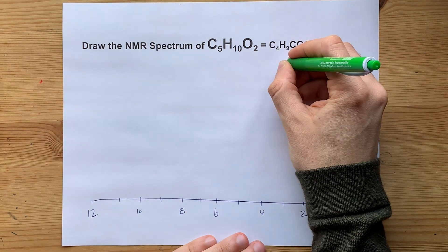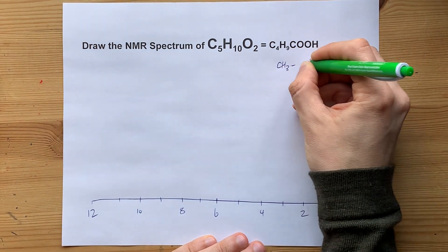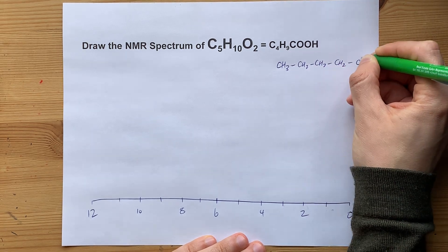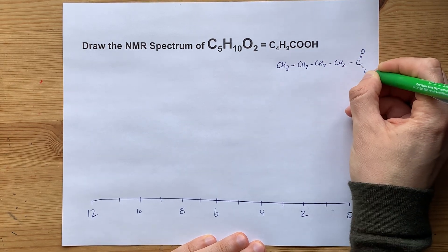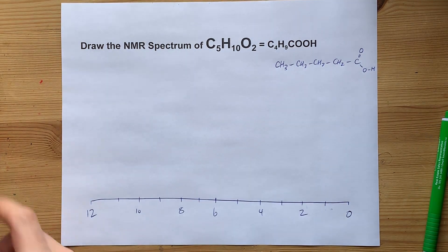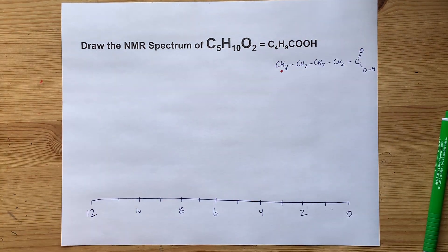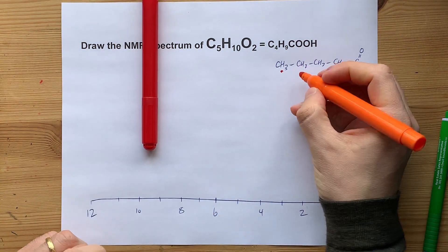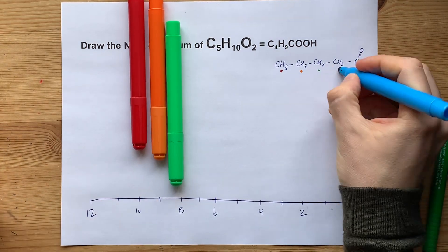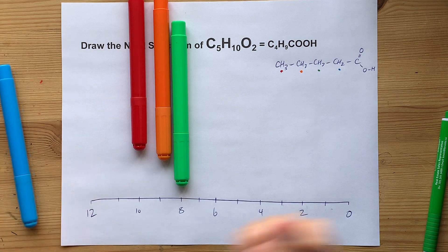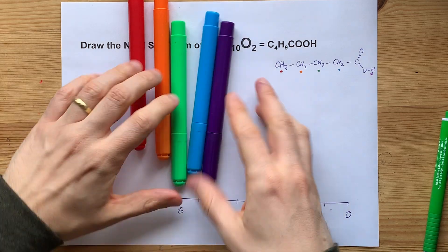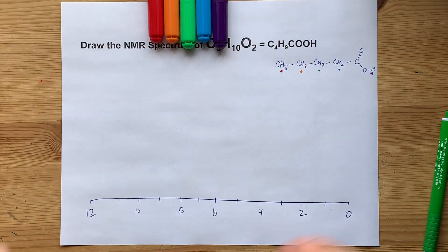This molecule has a CH3 group, a CH2, CH2, CH2, and then a carbon with a double-bonded oxygen and an OH group. This gives us five different types of hydrogens. These hydrogens are all chemically equivalent within their groups, and then this hydrogen — the OH — is all alone at the end. That's five different types, and I've got five different colors to draw the peaks for you.